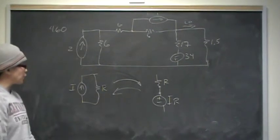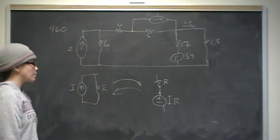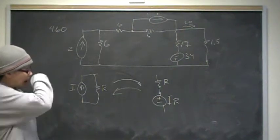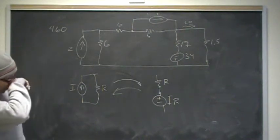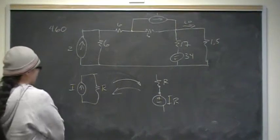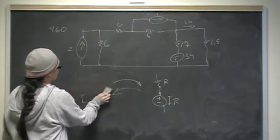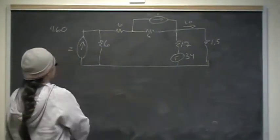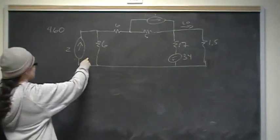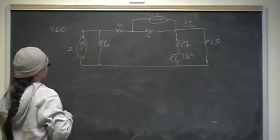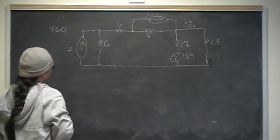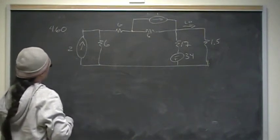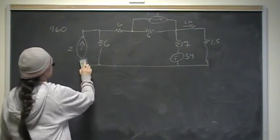To find the value of the current, use Ohm's law: I = V/R. To find the value of the voltage, use Ohm's law: V = IR. So let's start with the first transform. We have 2 amps in parallel with 6 ohms, so that's the same as a voltage of value IR = 12 volts in series with that same 6-ohm resistor.